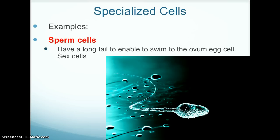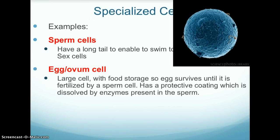Other examples include sperm cells. Sperm cells have a long tail to enable them to swim to the ovum or egg cell. Sperm cells are sex cells. The egg or ovum cell is a large cell with food storage, so the egg survives until it is fertilized by a sperm. It has a protective coating, which is dissolved by enzymes present in the sperm cells.